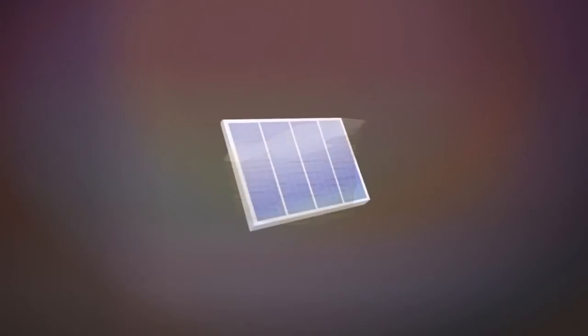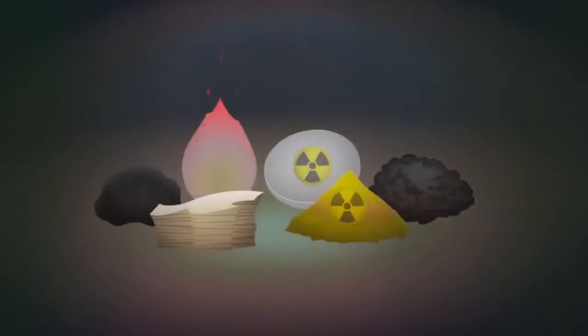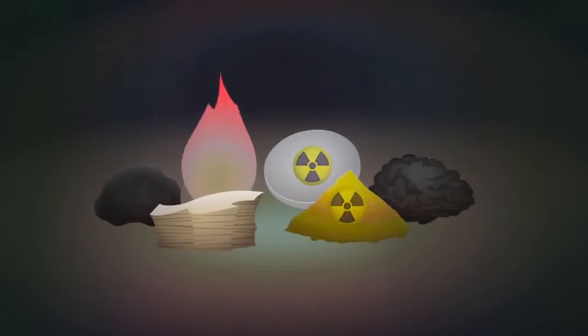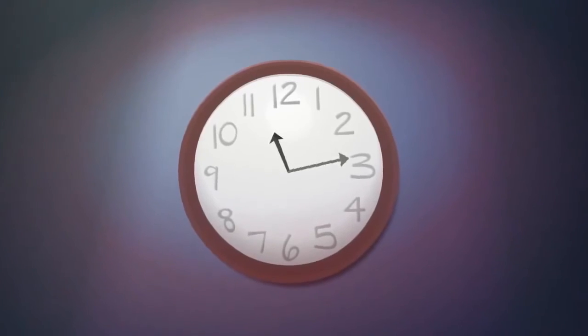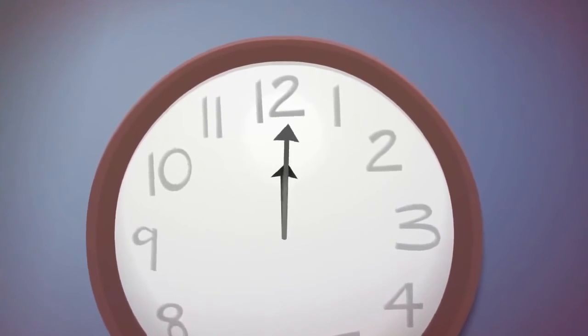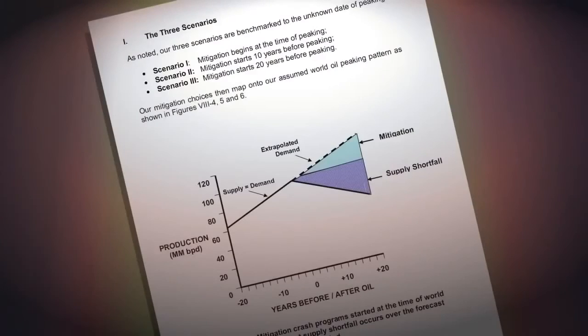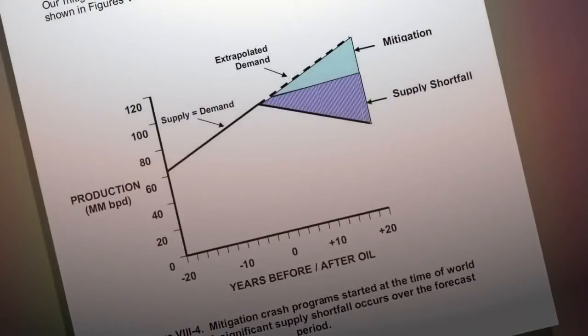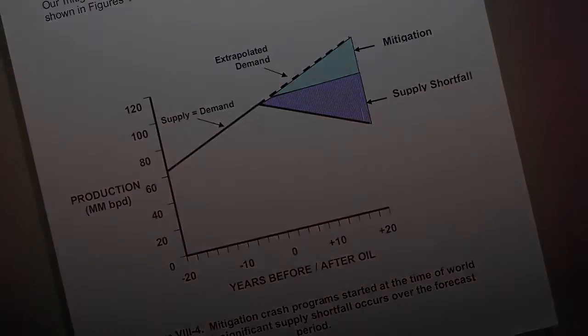Many economists believe that the free market will substitute one energy source with another through technological innovation. However, the main substitutes to oil face their own decline rates. Substitution also fails to account for the time needed to prepare for a transition. The US Department of Energy's Hirsch report estimates that at least two decades would be needed to prepare for the effects of peak oil.